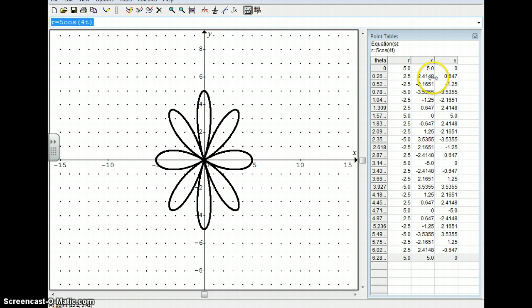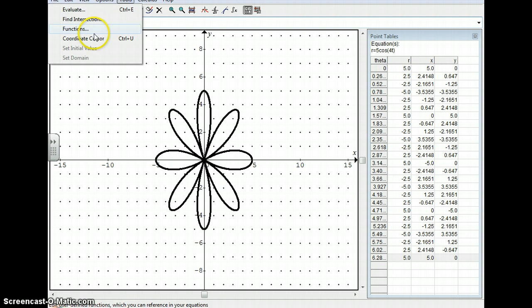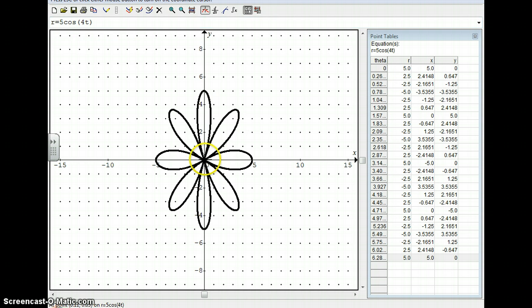It's kind of up to you whether you choose to use the point table method or this coordinate cursor tool, which is really nice, I think, because it will just follow right along the curve with you. You can pull it off the curve, right? But it will basically travel along the curve if you kind of help it with your mouse or with the trackpad on the computer, whatever you're using.